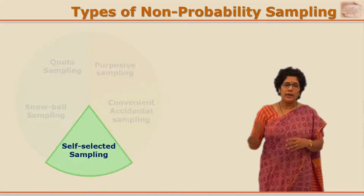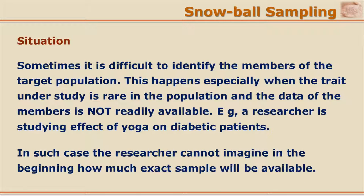Imagine a study where a researcher is trying to study the effect of yoga on diabetic patients. This kind of population will certainly not be gathered at one location, and hence it will not be possible to prepare a list and go for randomization. It will also not be possible to know who is following yoga and also has diabetes. In such a case, the researcher incidentally comes to know about one person, goes and talks to that person, collects data, and then asks whether they know any other person who is diabetic and following yoga.